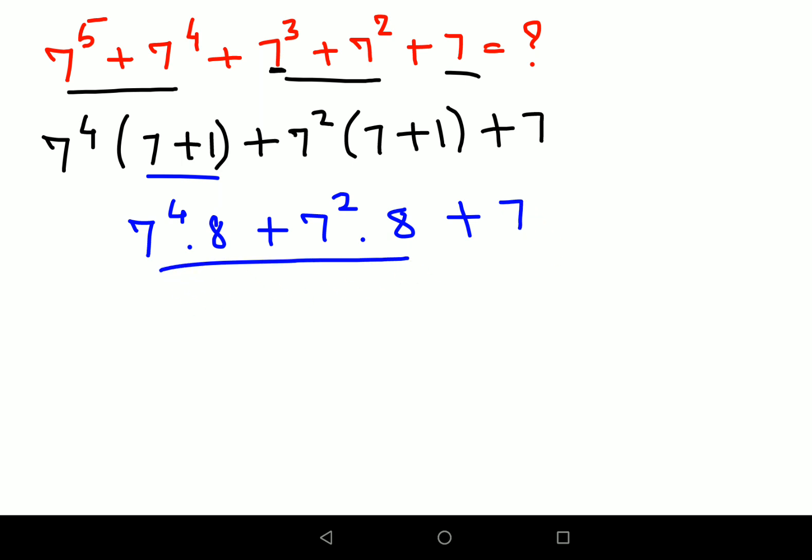So now out of these two let's take 8 common. So we are left with 8 and if you look closely I can also take 7 square common.